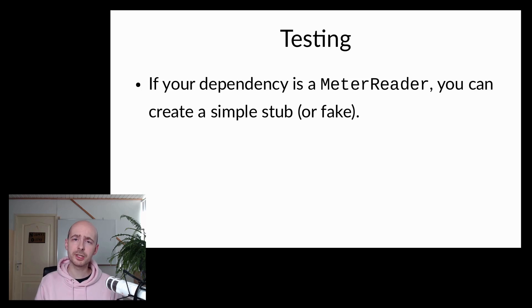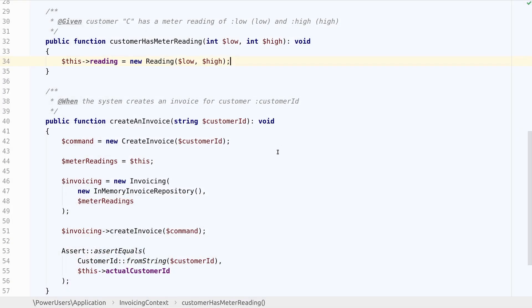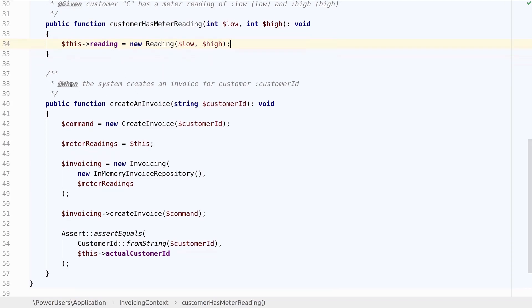If, on the other hand, your dependency is the meter reader abstraction, you can create a very simple stub or fake object which represents the meter reading in your own domain's language. Looking at the code of the step definitions, we see a different implementation for this step given customer C has a meter reading, where low and high are provided as values from the scenario. We can immediately instantiate our custom reading object, which is actually part of our domain. And in the when step, when the system creates an invoice for customer, we create the invoice in the same way as we did before. But now, instead of the HTTP client, we inject a meter readings instance, which again is implemented by the context itself.